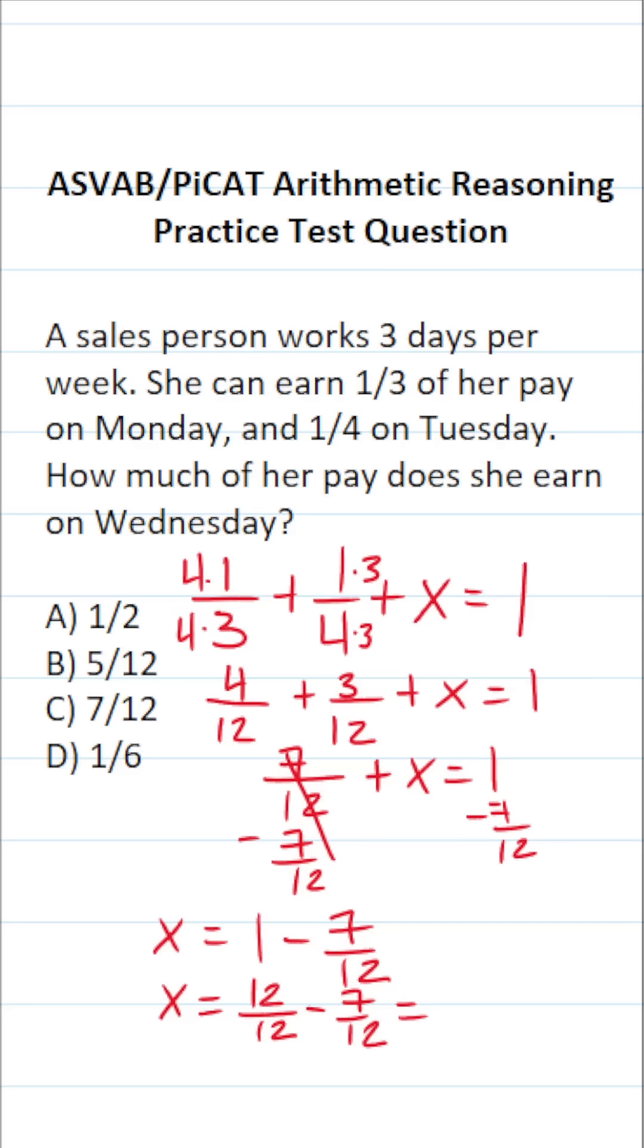Now that these have a common denominator, we can easily subtract them. Again, our denominator is not going to change. This becomes 12 minus 7, which is 5. So this becomes 5 over 12. In other words, she earns five-twelfths of her pay on Wednesday. So this one is B.